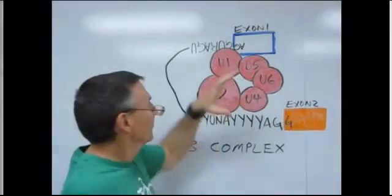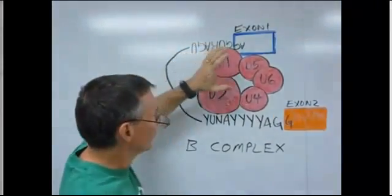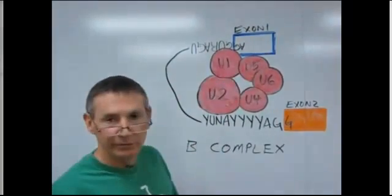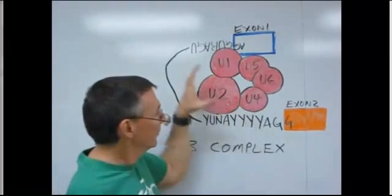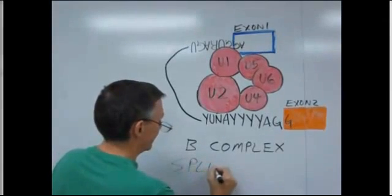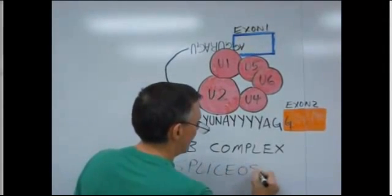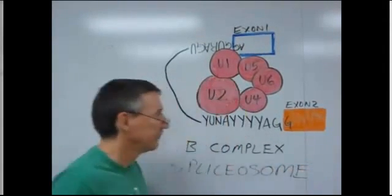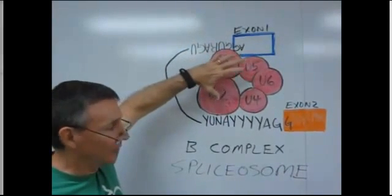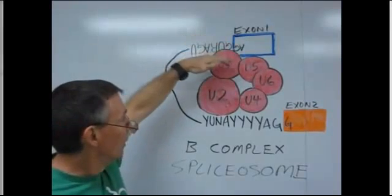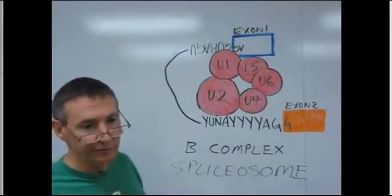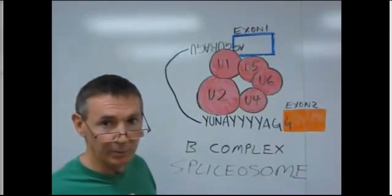After the A complex is formed, three more snRNPs join: U4, U5, and U6. This complex of five snRNPs is known as the B complex — this is also what's typically referred to as the spliceosome. In this complex, it goes through some rearrangements, and ultimately the U1 snRNP and the U4 snRNP are going to leave, leaving behind the active functional complex known as the C complex.